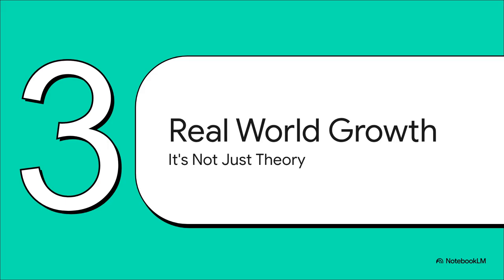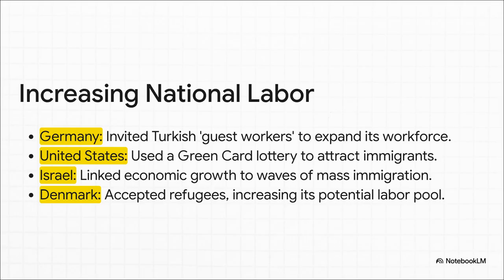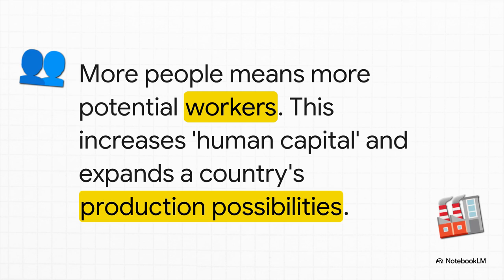This isn't just abstract theory about a guy on an island — this principle is fundamental economic strategy for entire nations. To fuel its incredible post-war recovery, Germany invited millions of guest workers from Turkey. The United States has famously used immigration, with things like the Green Card Lottery, to bring in new people and new skills. Israel shows a clear connection between big waves of immigration and major periods of economic expansion. And when Denmark accepted refugees, one economic effect was an increase in its potential labor pool. These countries all understood that to grow, you need more of the key ingredients. The same logic holds if a country builds more roads and ports — that's more capital — or discovers massive shale gas reserves — that's more land. It's all about pushing that national production possibility curve outward.